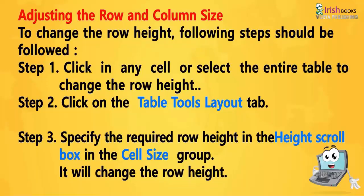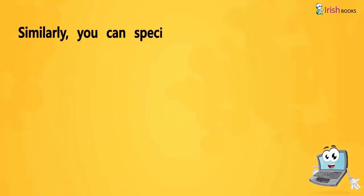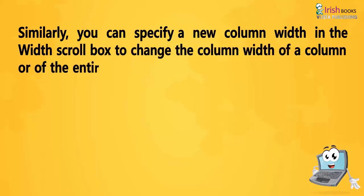Adjusting the row and column size. To change the row height, following steps should be followed. Step 1: Click in any cell or select the entire table to change the row height. Step 2: Click on the Table Tools Layout tab. Step 3: Specify the required row height in the Height scroll box in the Cell Size group. It will change the row height. Similarly, you can specify a new column width in the Width scroll box to change the column width of a column or of the entire table.